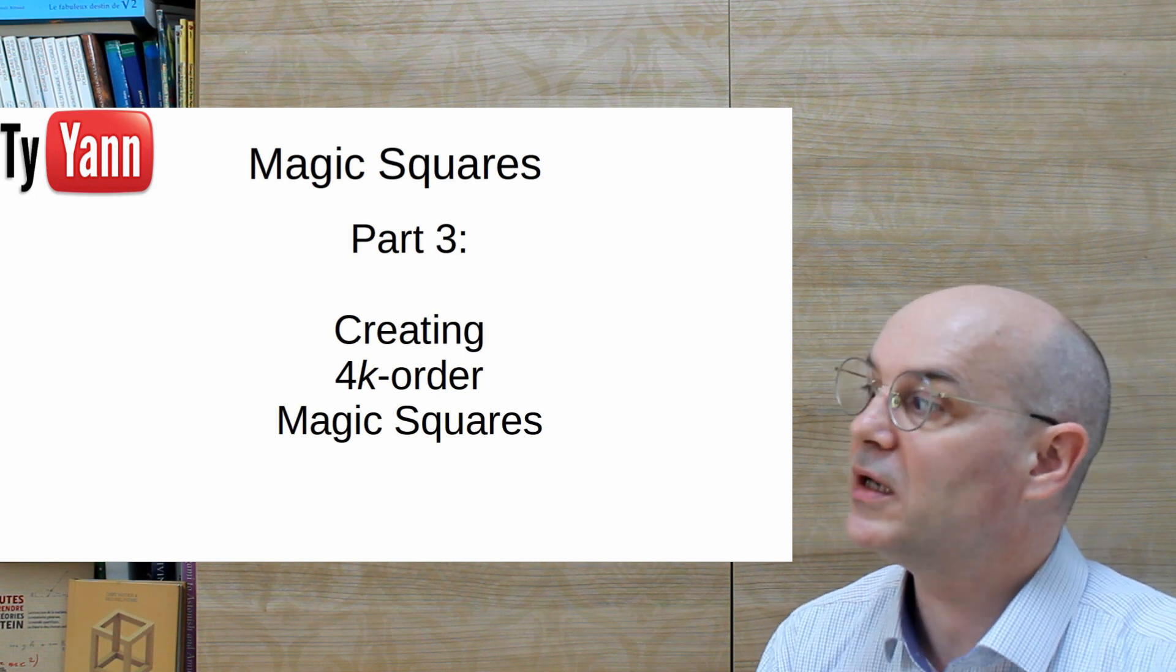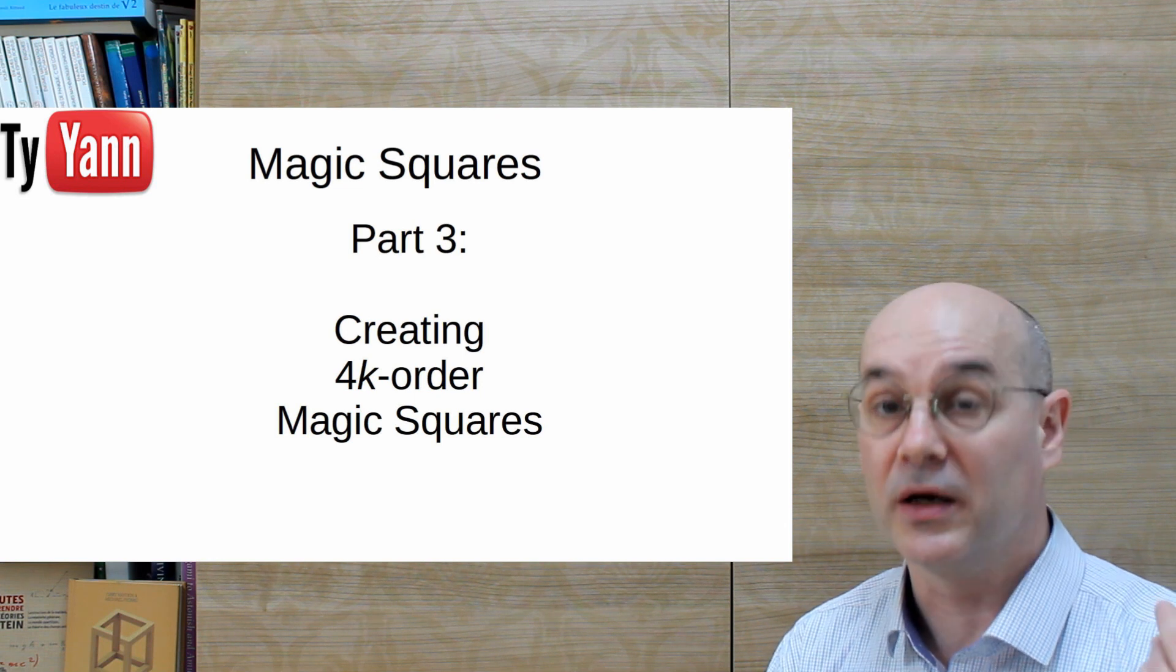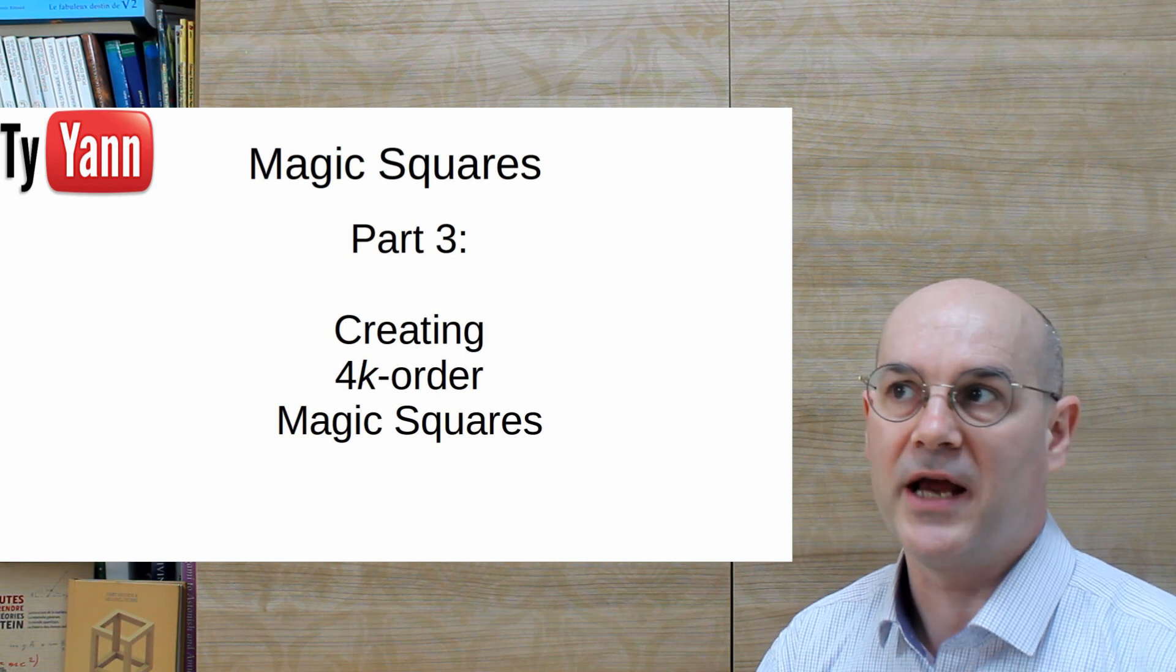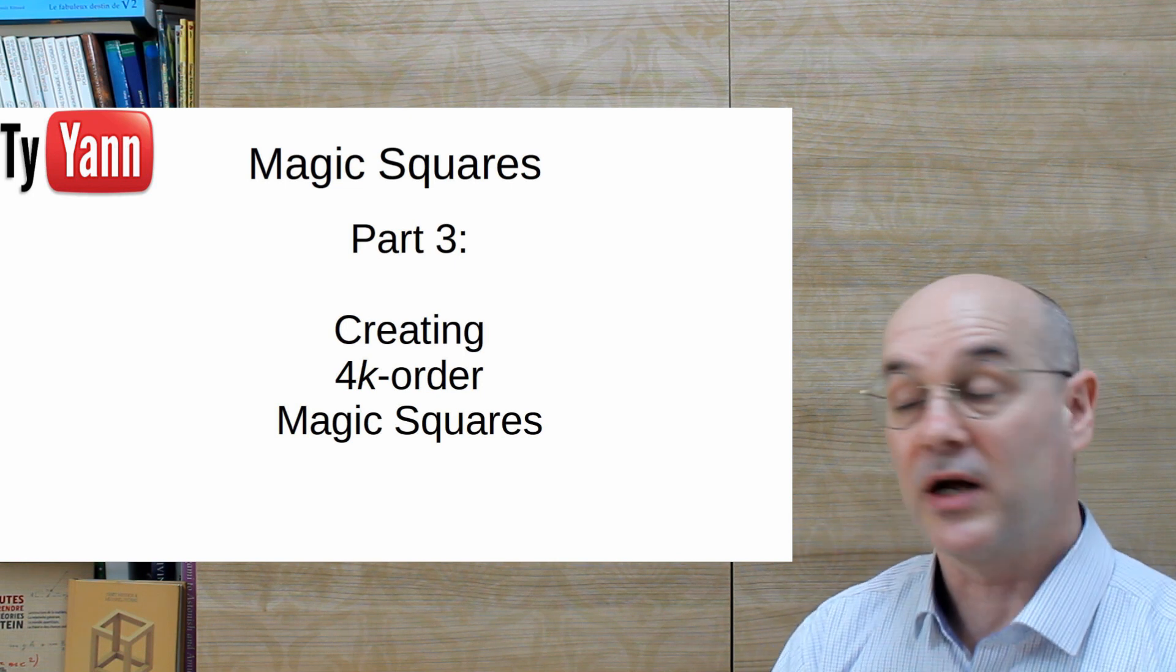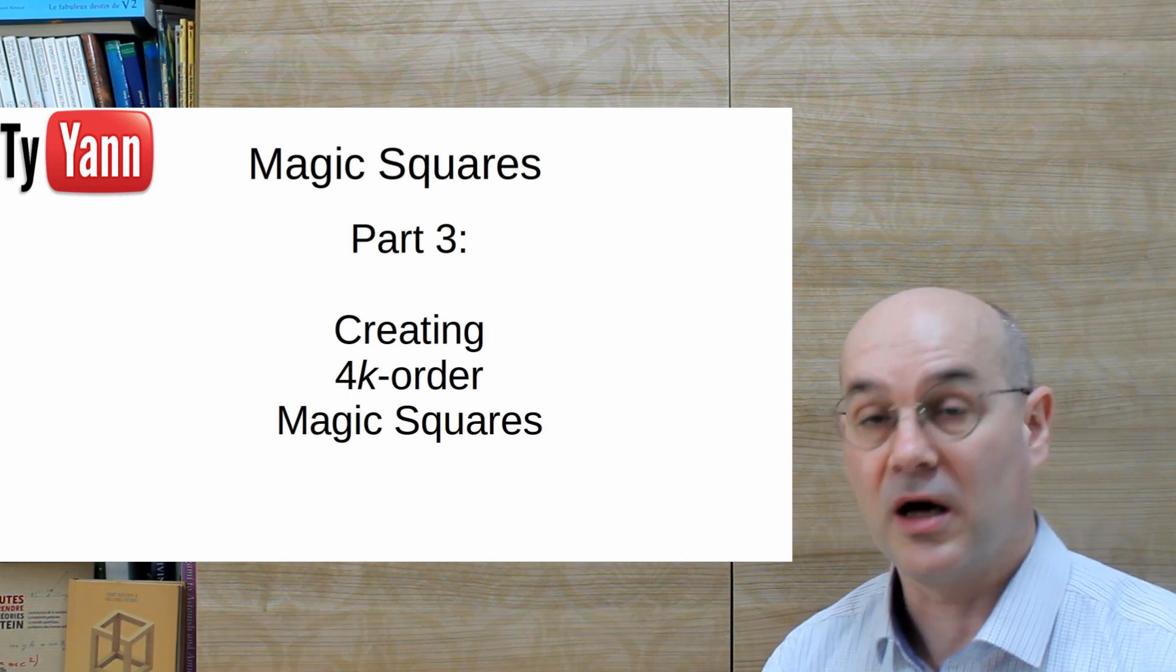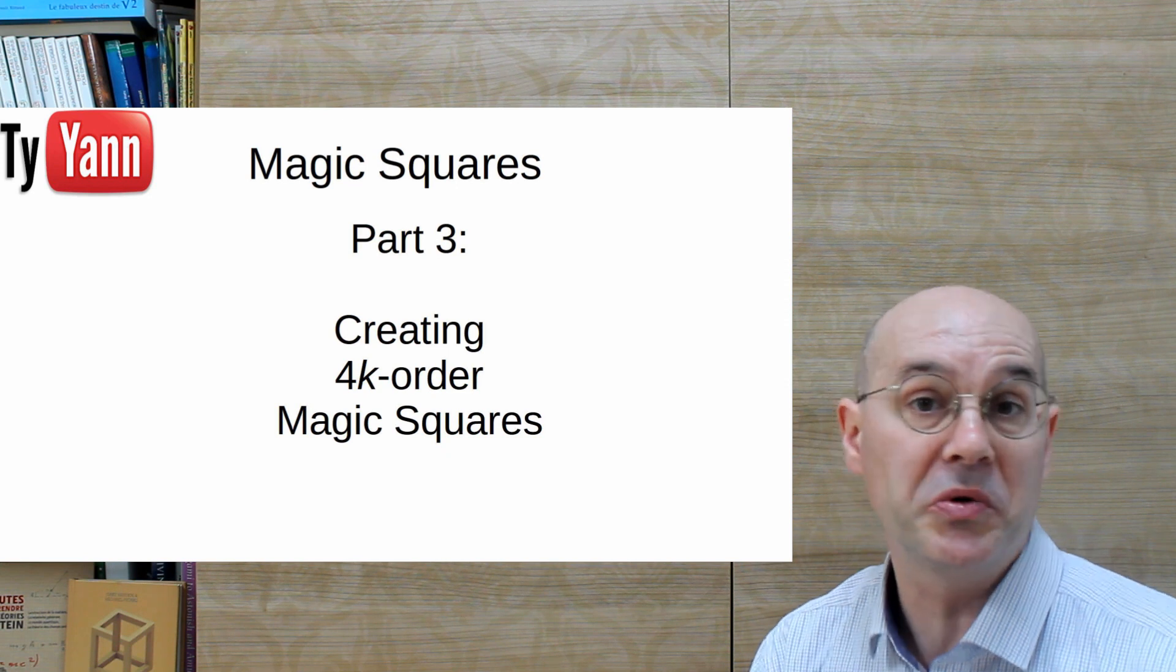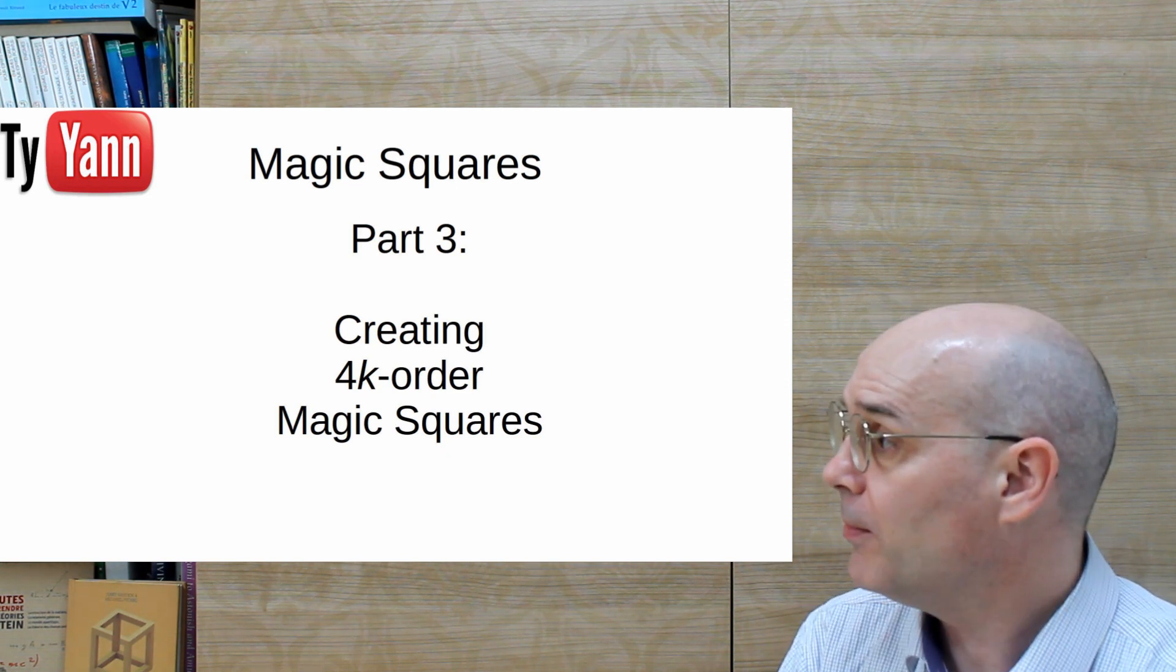Why do we write this like that? Because we will need to know k, which means that if you have a 4x4 you have to know that k is 1, 8x8 you have to know that k is 2, et cetera. That's the only thing for which we need to know k and write it like this. So multiple 4.